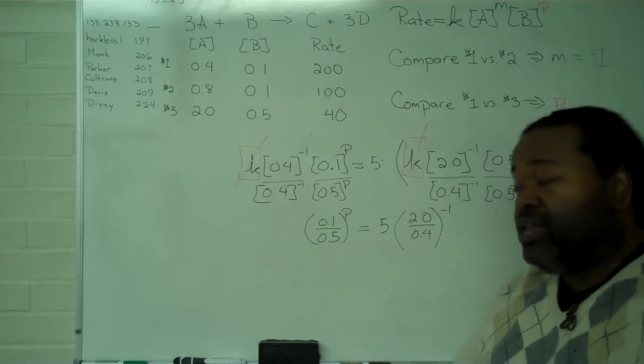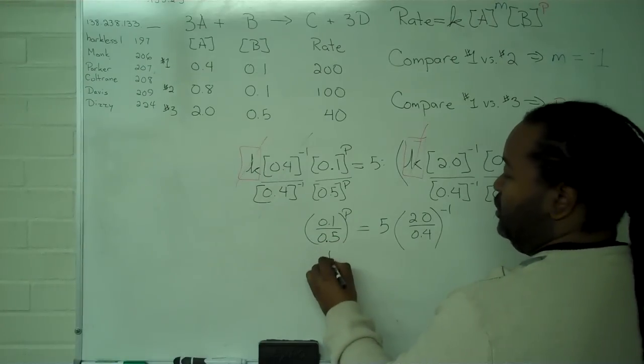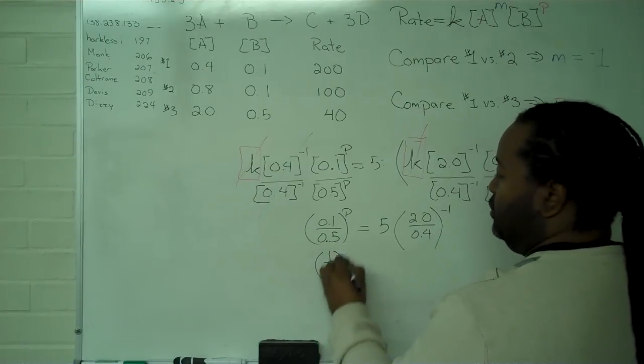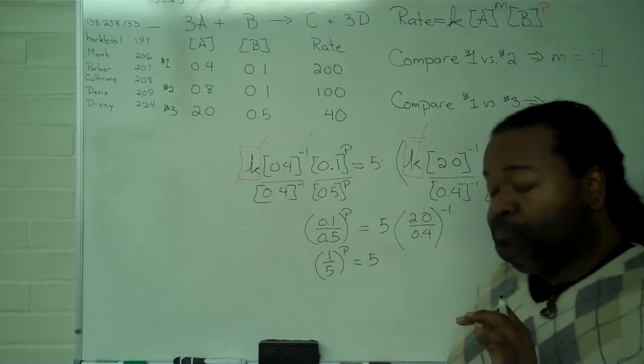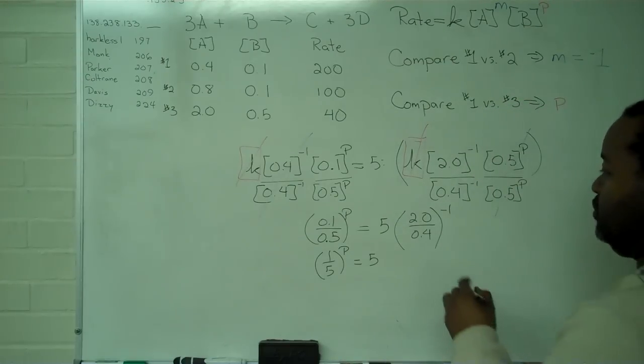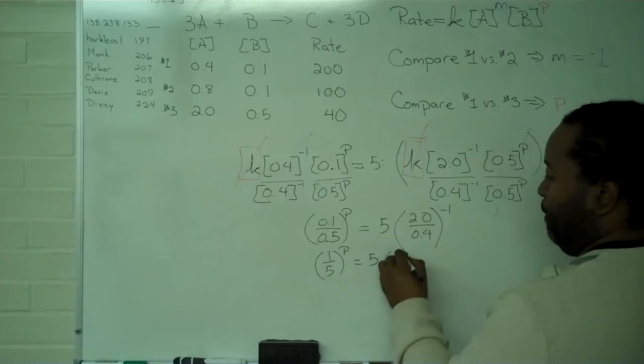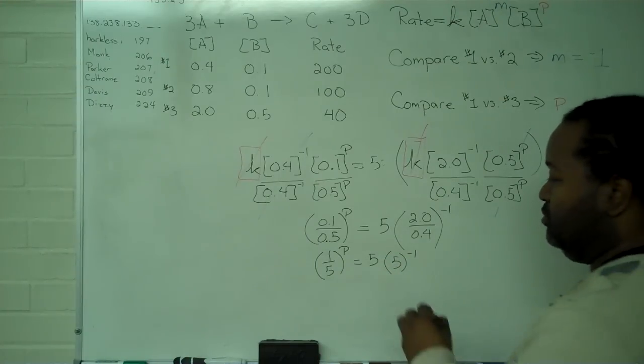In this case, we have to do a little bit of math. 0.1 over 0.5 is just 1 fifth. So, 1 over 5 to the P equals 5 times 2.0 divided by 0.4 is going to give me 5. And 5 times 5 to the negative 1 gives me 1.